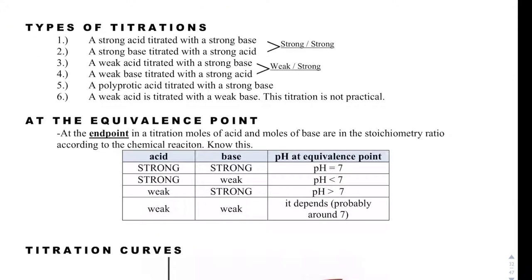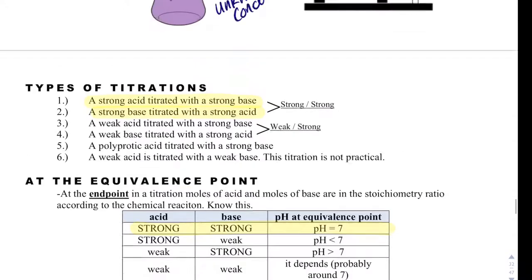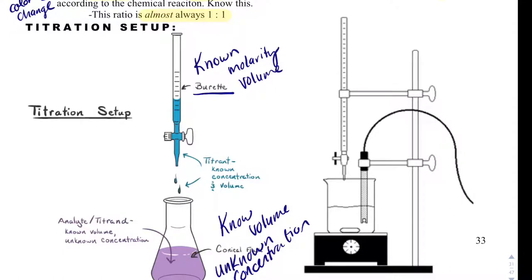There are many different types of titrations. There's titrating something strong with something strong. When you titrate something strong with strong, at the equivalence point the pH is going to be about 7. Typically, what is in your burette will be strong, so that things go a little bit more predictable and faster.